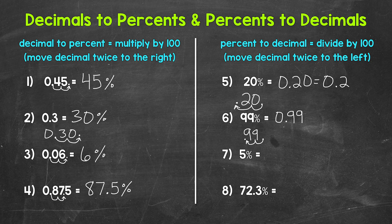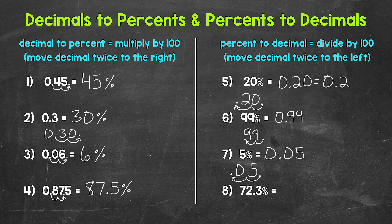Moving on to number seven, we have 5%. Let's rewrite this with a decimal, then divide by 100 by moving the decimal once, twice to the left. We fill that gap with a zero, giving us 0.05 — five hundredths. So 5% equals five hundredths.